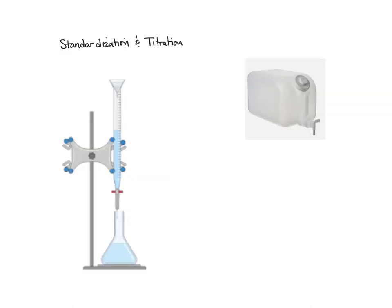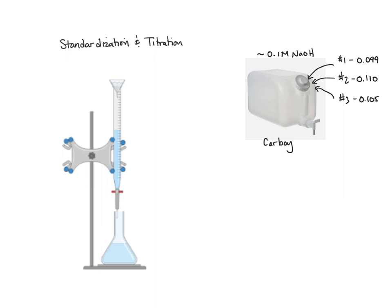Let's start talking about standardization and titration. What we have up on the right is called a carboy, and this is where we've put what we think is a 0.1 molar NaOH solution. Everyone in class made a bunch of solutions — so person one made 0.099, person two made 0.110, person three made 0.105. Those get close to 0.1, but we don't know what they are. So we need to standardize it, and we're going to do that through titration.